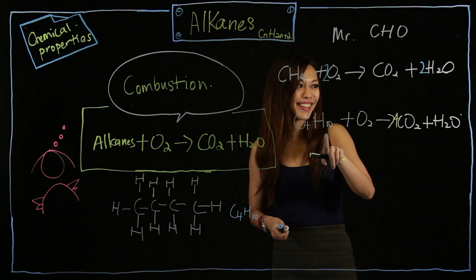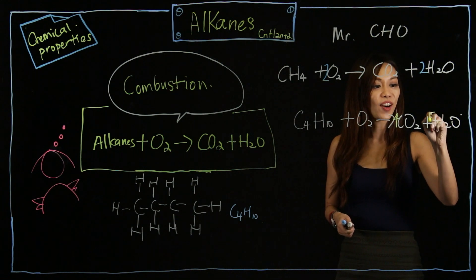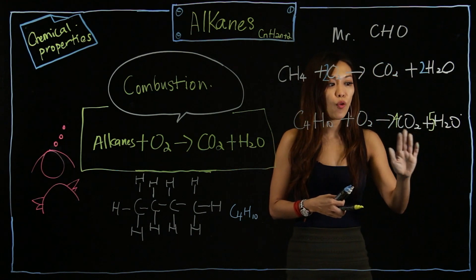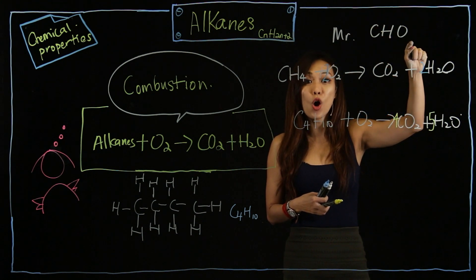Now H here is 10, but I only have 2. So what should I do? I put a 5. Voila. Now then I have 10 H and I have 4 C. Balance the C followed by the H followed by the O.